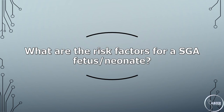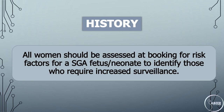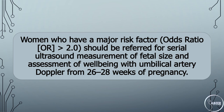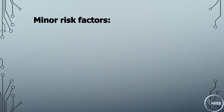What are the risk factors for a small for gestational age fetus or neonate, and what is the optimum method of screening? All women should be assessed at booking for risk factors for a SGA fetus or neonate to identify those who require increased surveillance. Women who have a major risk factor or an odds ratio greater than 2.0 should be referred for serial ultrasound measurement of fetal size and assessment of well-being with umbilical artery Doppler from 26 to 28 weeks. Women with 3 or more minor risk factors should be referred for uterine artery Doppler at 20 to 24 weeks of gestation.